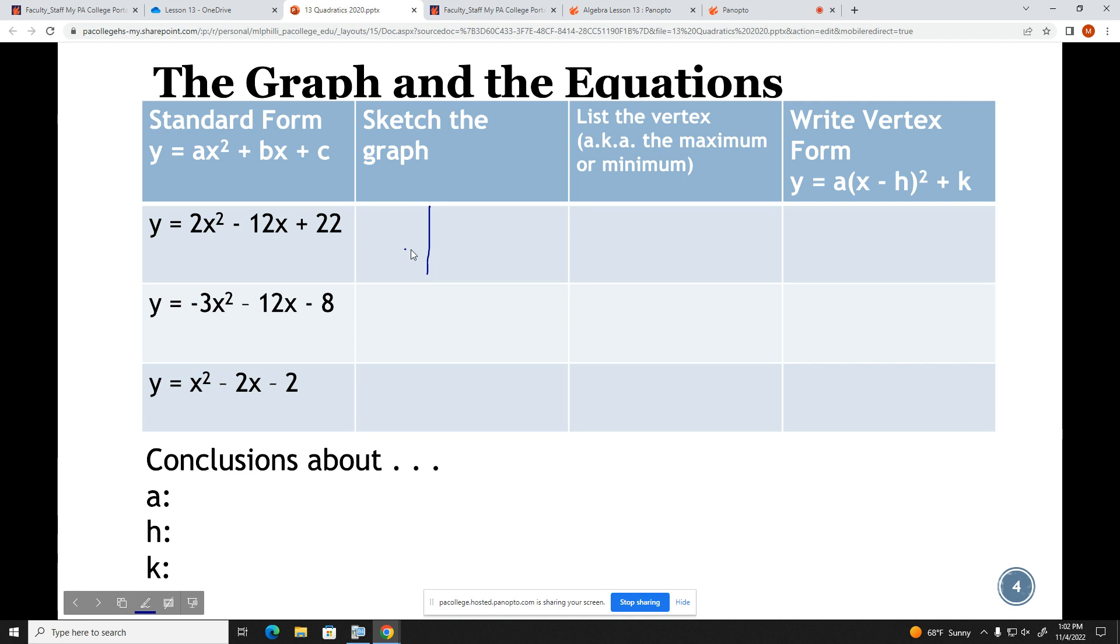So the first graph looks somewhat like this. The vertex, or the minimum in this case, was the ordered pair (3, 4). In vertex form, this equation became y = 2(x - 3)² + 4.